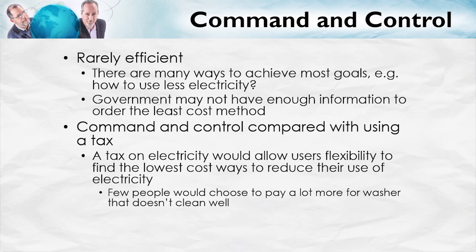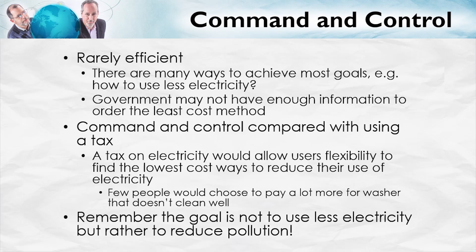Probably not too many. That illustrates that when government chose to reduce electricity consumption by requiring washers to be 'more efficient,' that actually wasn't the least cost way of reducing electricity. That was actually a very high cost way, because it meant that we had dirty clothes and we really didn't want that. Finally, let's remember that the goal is not actually to use less electricity — the goal is to reduce pollution. That's why a Pigouvian tax is one of the most efficient ways of controlling an externality, because it is targeted on the problem: the pollution. The closer we can get the tax to the good actually causing the problem — which is not electricity but pollution — the more efficient and lower cost our solution to the externality problem will be.